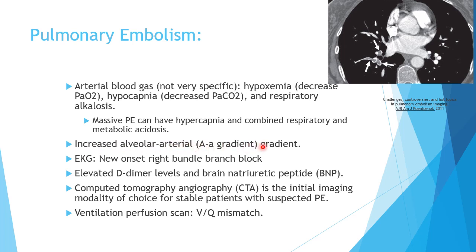Pulmonary embolism also causes an increased alveolar-arterial (A-a) gradient — the difference between oxygen concentration in the alveoli and in the arterial blood. Not all oxygen in the lung will transfer to the blood, so the A-a gradient is increased in pulmonary embolism. On ECG, most cases are done to exclude myocardial infarction, but some cases of PE may show a new-onset right bundle branch block.